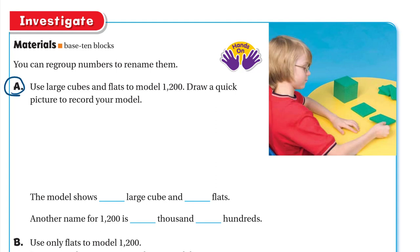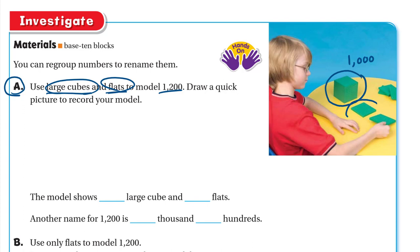At letter A, use large cubes and flats to model 1200 and draw a quick picture to record your model. We will use only large cubes and flats to model 1200. A large cube equals 10 flats, or 1000. A flat is 100, so we have two flats — each is 100 — giving us 1000 and 200: one large cube and two flats.